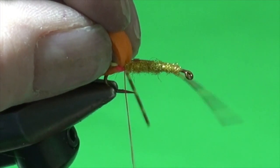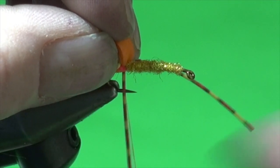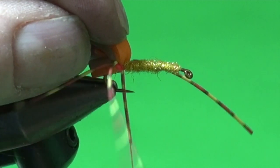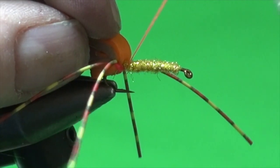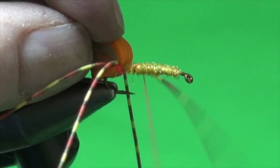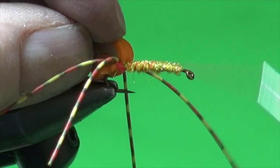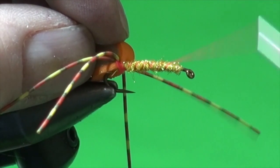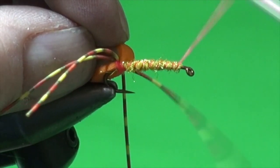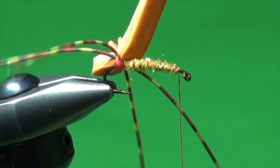Then we're just going to pull this back. And I'm going to spin my bobbin clockwise to cord up my thread and very quickly run through the body. It's going to give it a little ribbed effect, add a little durability. Take that right up to the front of the body.